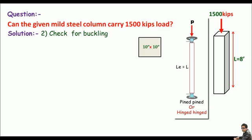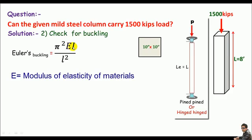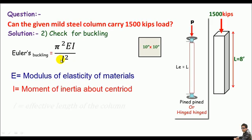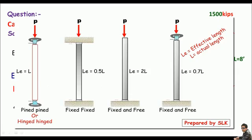Now I'll check the column for buckling, and this is my next approach. To check the column for buckling, I need to calculate the buckling load. For this I can use Euler's buckling load formula as π²EI / L². Here π is a known value, E is the modulus of elasticity of the material, I is the moment of inertia, and L represents the effective length which depends upon the end condition of the column.